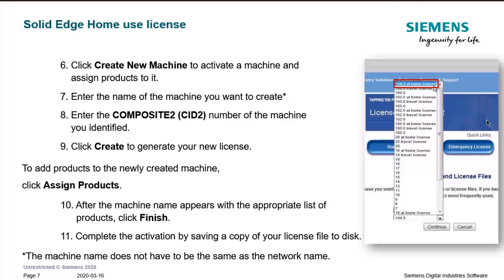To add products to the newly created machine, click Assign Products. After the machine appears with the appropriate list of products, click Finish. To complete your activation, save a copy of the license to your disk — you can save it on the desktop or in a specific directory that can be accessed later.